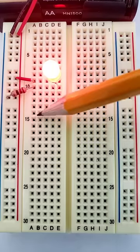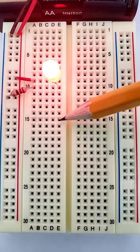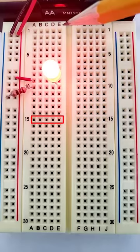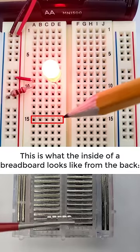This is a breadboard. Holes are connected in sets of five in each row. For example, these five holes in columns A through E in row 15 are connected.